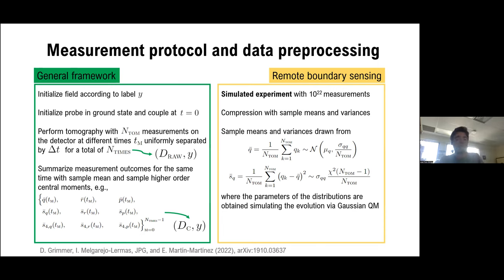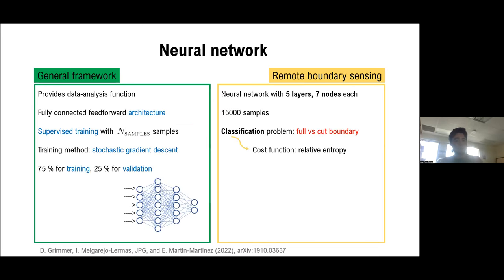In our example, what we did was to simulate the experiment. And in that sense, we just applied the central limit theorem and we draw the sample means and sample variances from the distributions that you can see in this slide, where mu_q and sigma_qq are parameters that we get from simulated evolution, which we did thanks to the discrete cavity approximation using Gaussian quantum mechanics.